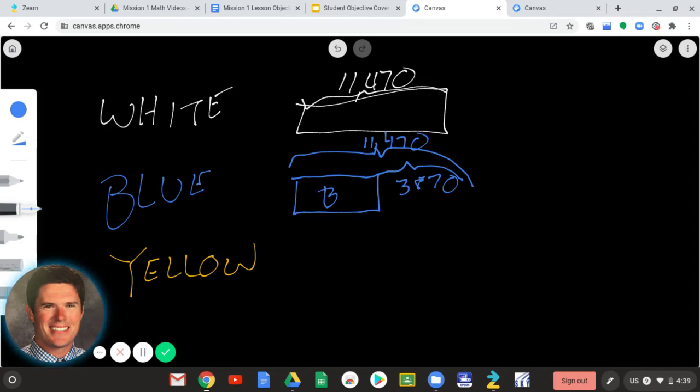Now, how do I figure that out? If I know a total and I know one of the pieces, I subtract. So, I can figure out the blue by 11,470 minus 3,870.